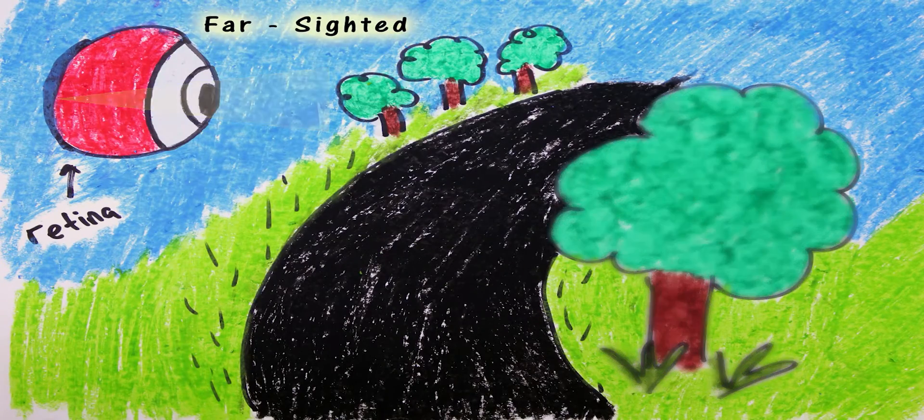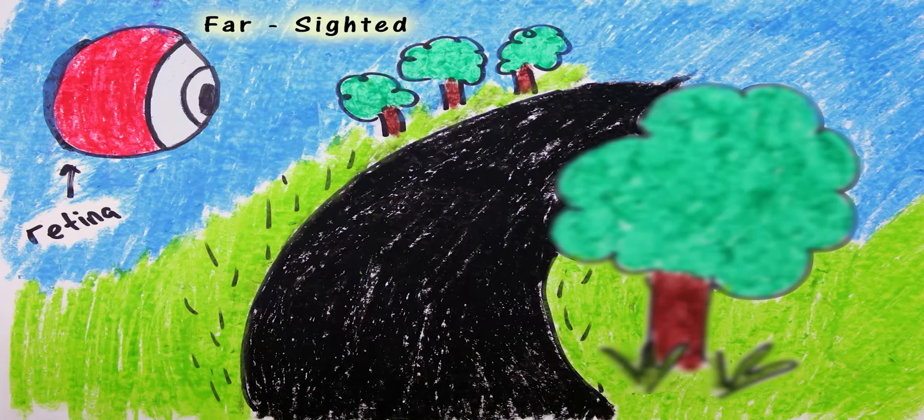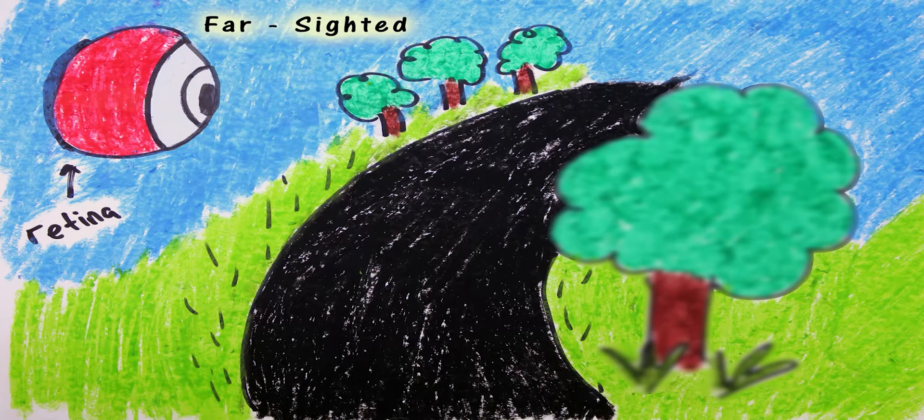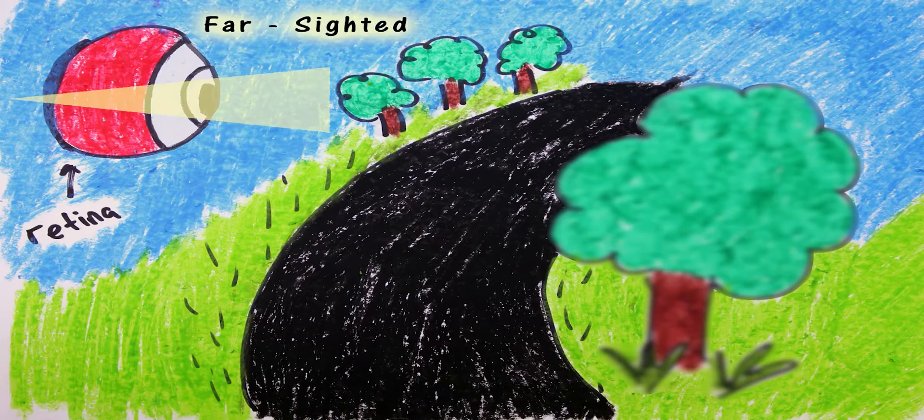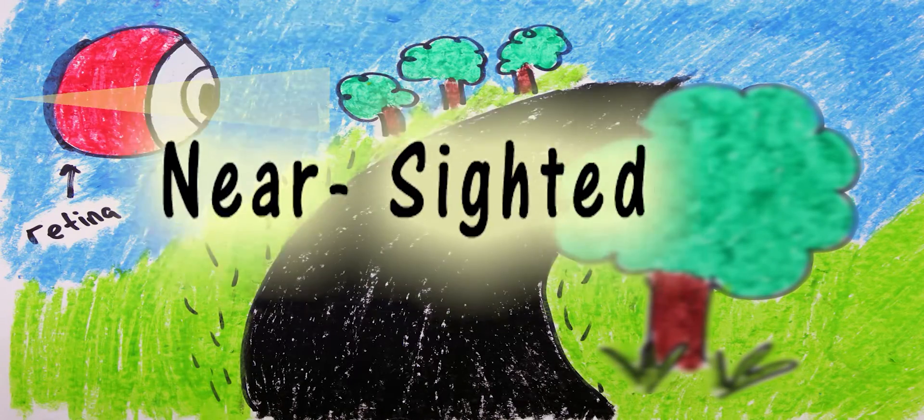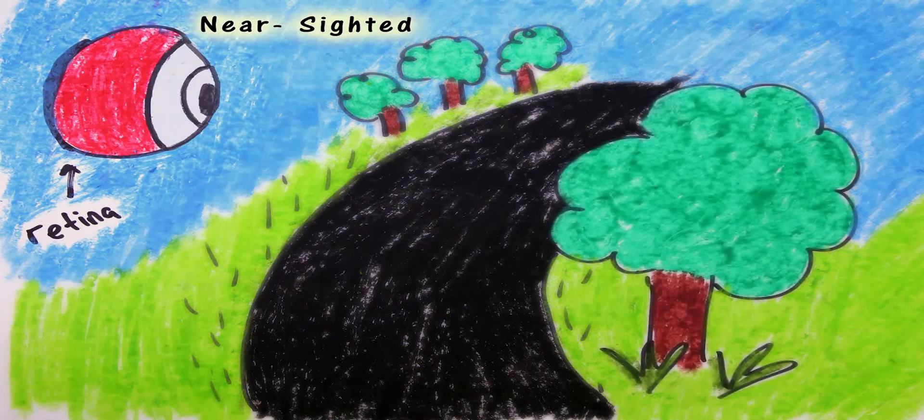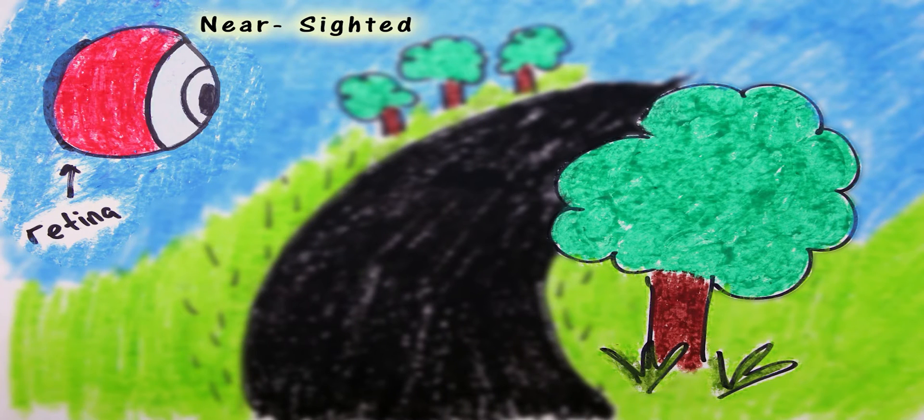Farsighted people see perfectly at long distances but have to focus harder on close objects because the light is focused on a point behind the retina and the view appears fuzzy. Nearsighted people can see clearly at close distance, but when trying to focus on objects further away, the light is focused on a point in front of the retina and everything appears blurry.